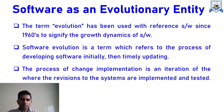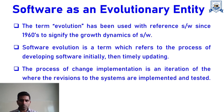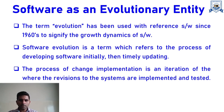The term Evolution has been used with reference to software since 1960 to signify the growth dynamic of software. Software Evolution is a term which refers to the process of developing software initially and then ultimately updating it. Once software is developed initially, due to the surrounding environment, a number of versions change from time to time. These versions may be due to software updates, hardware updates, or technology updates. So there is a need for a Software Evolutionary Process.